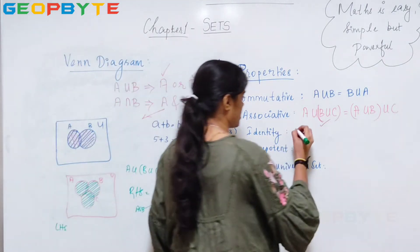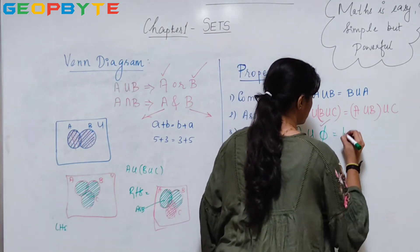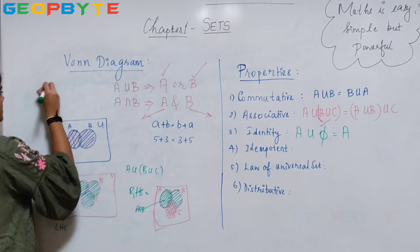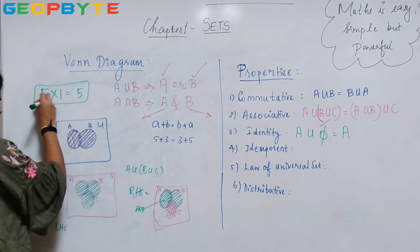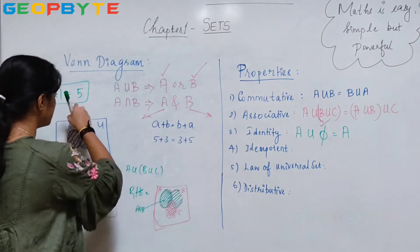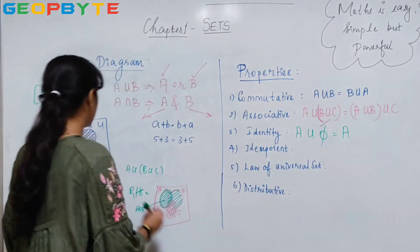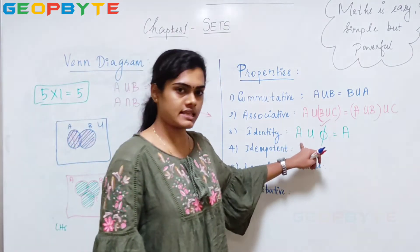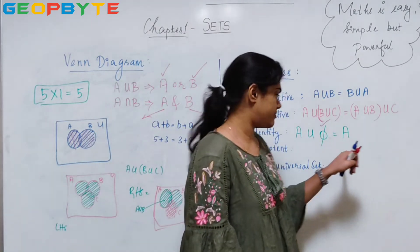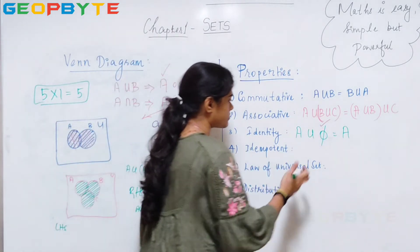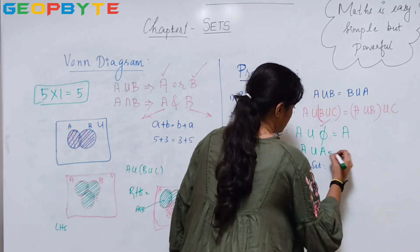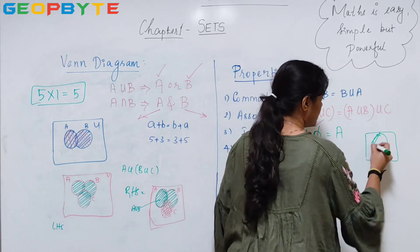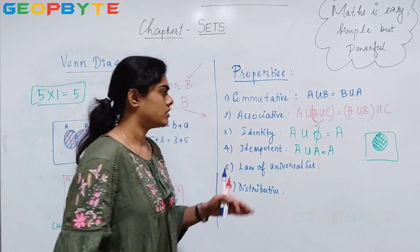Now, what is my identity property? A union null set is equal to A. That means it is similar as 5 times 1 equals 5 — because it gives my same element. Similarly, here I get the same set. So how will I represent it? If I have no elements (null set) in union with set A, then it is A or null — that is A itself. Also, A union A will give me A. If this is my set A, the union with A will give me A itself. That is my identity property.